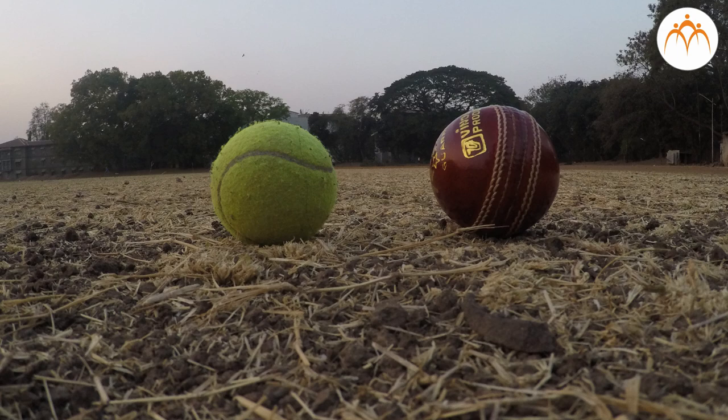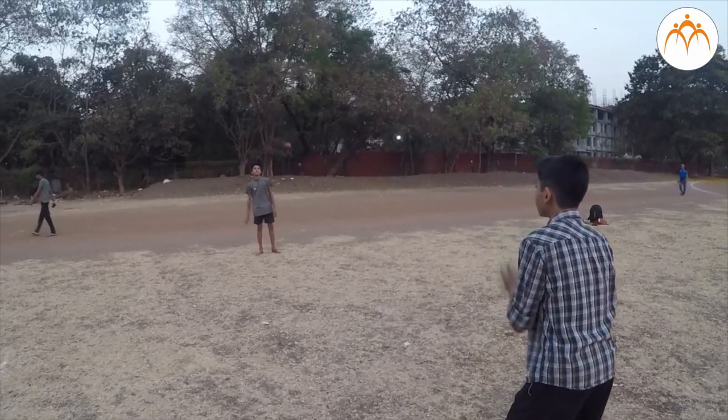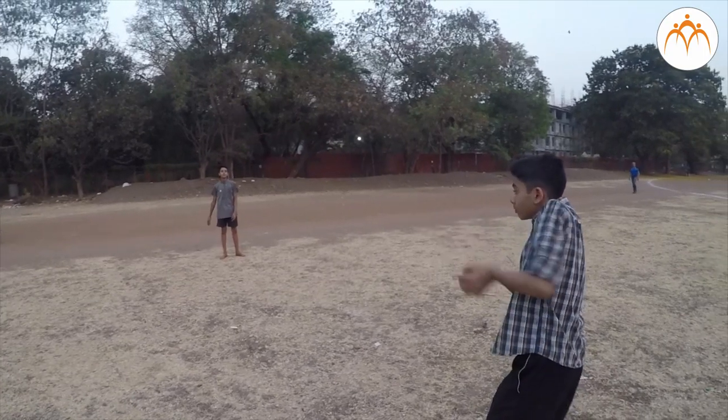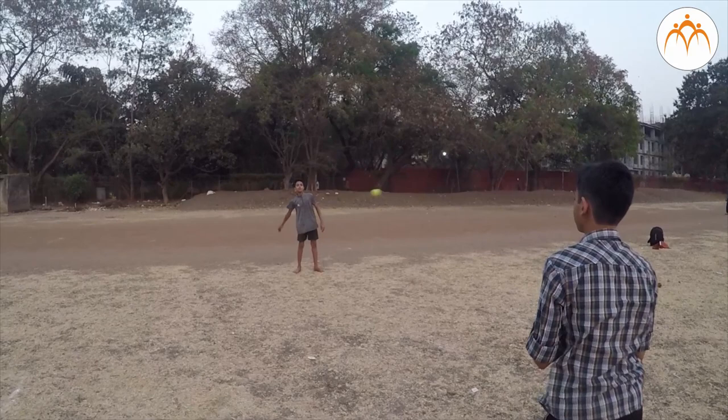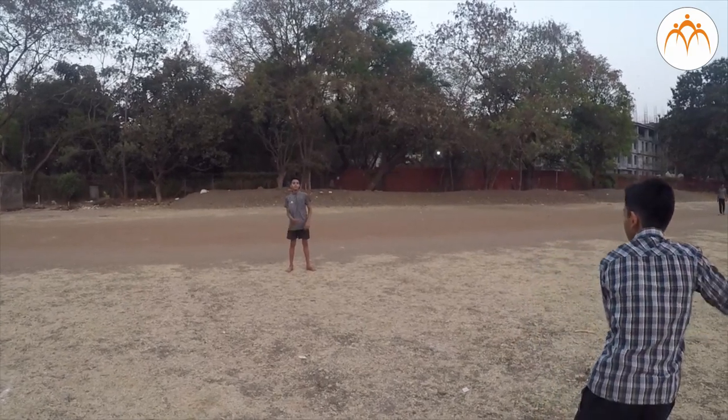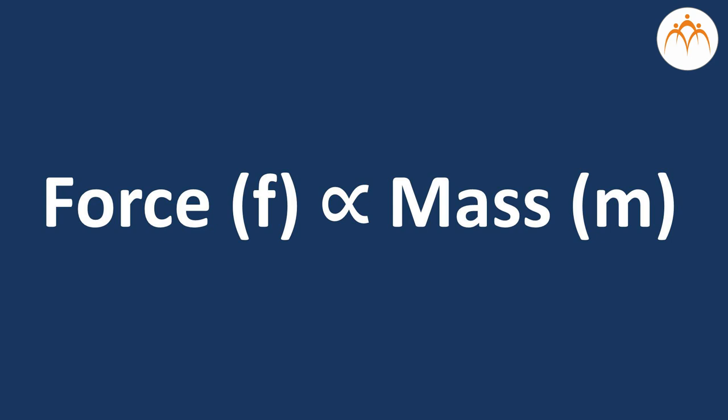Cricket ball is much more heavy than a tennis ball. Suppose we throw a cricket ball and a tennis ball both with the same speed or velocity. It will be found that more force is required to stop the cricket ball which has more mass and less force is required to stop the tennis ball which has less mass. Therefore, we can say that the force required to stop a moving body is directly proportional to its mass.